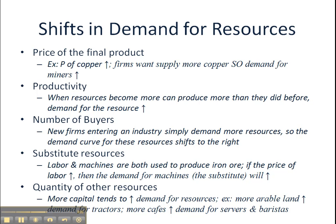The last factor is the quantity of other resources. More capital available tends to increase demand for a lot of other resources. For example, if a restaurant has 60 tables but is only using 10 of them, it will only require one or maybe two waiters. But if the other 50 tables are suddenly in use, the restaurant is going to need way more wait staff.